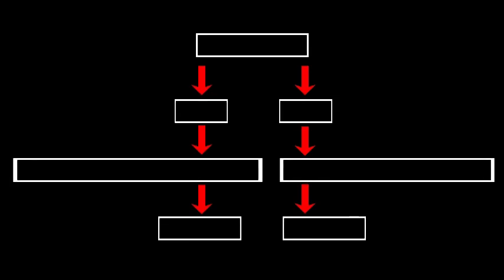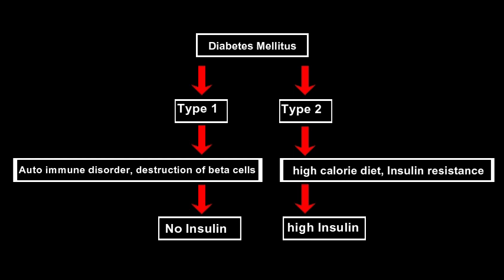Diabetes mellitus is very common and has two types. About 5 to 10% of cases are due to type 1, and the remaining approximately 95% are due to type 2. Type 1 is due to an inability to produce insulin — autoimmune destruction of the beta cells of the pancreas occurs, and since beta cells produce insulin, their destruction results in no insulin production and type 1 diabetes.